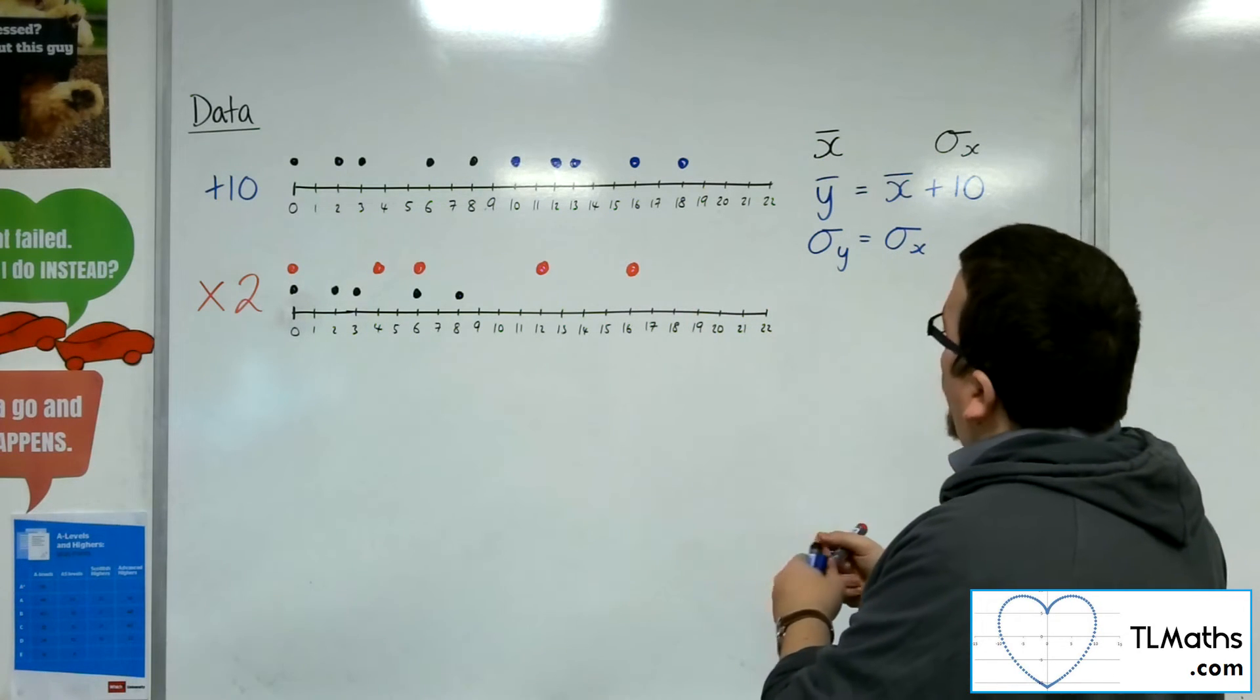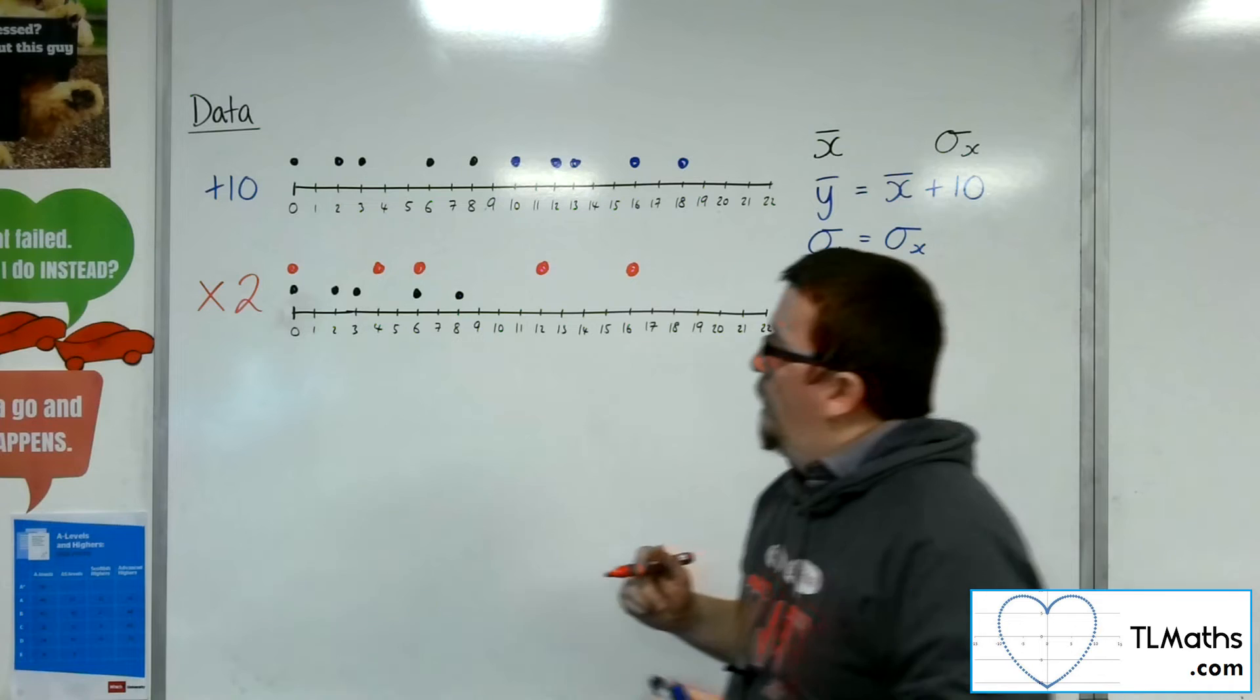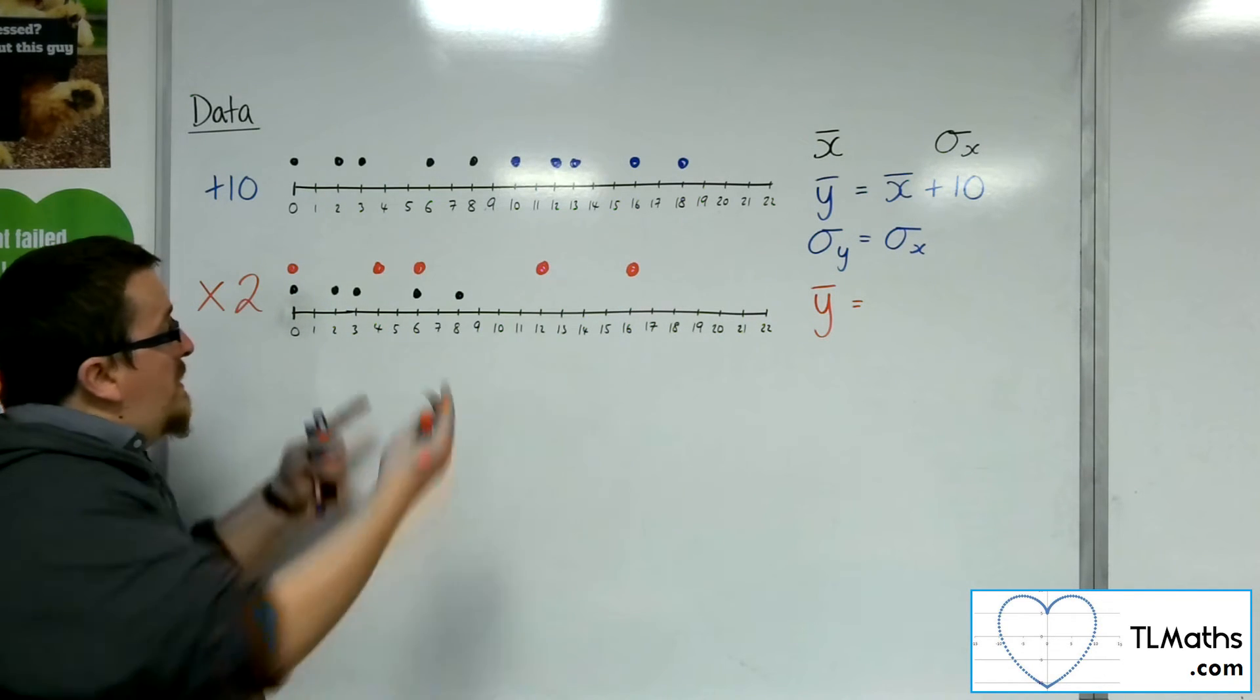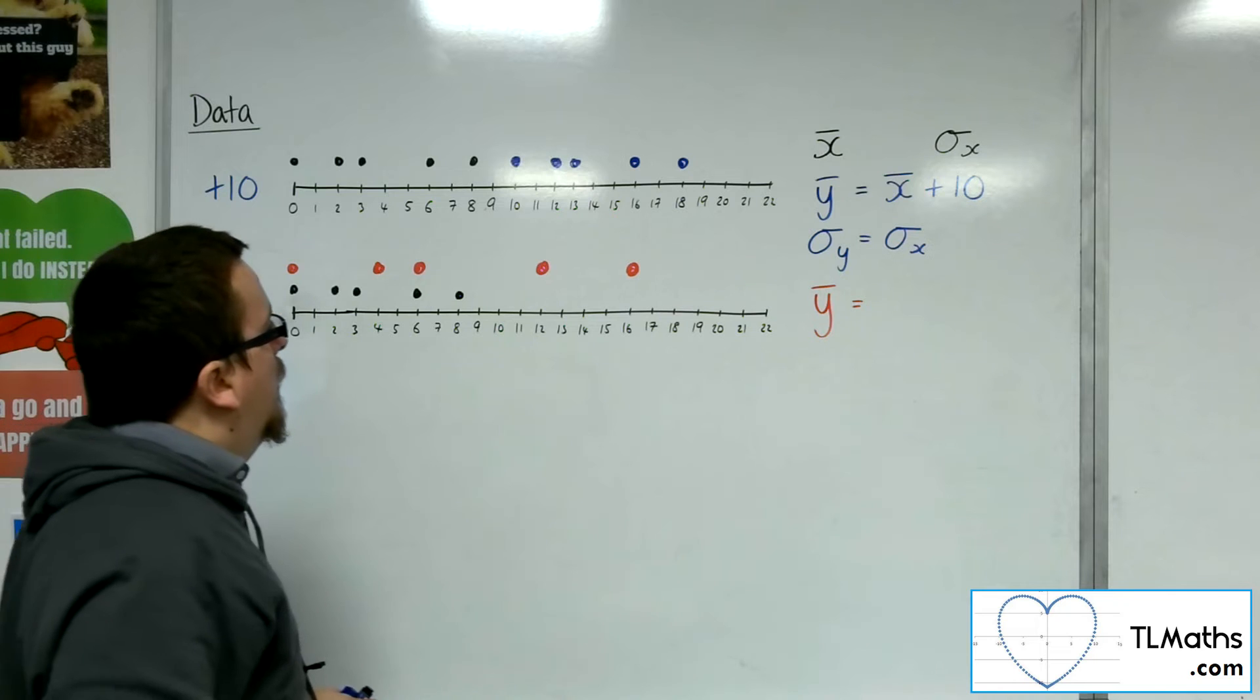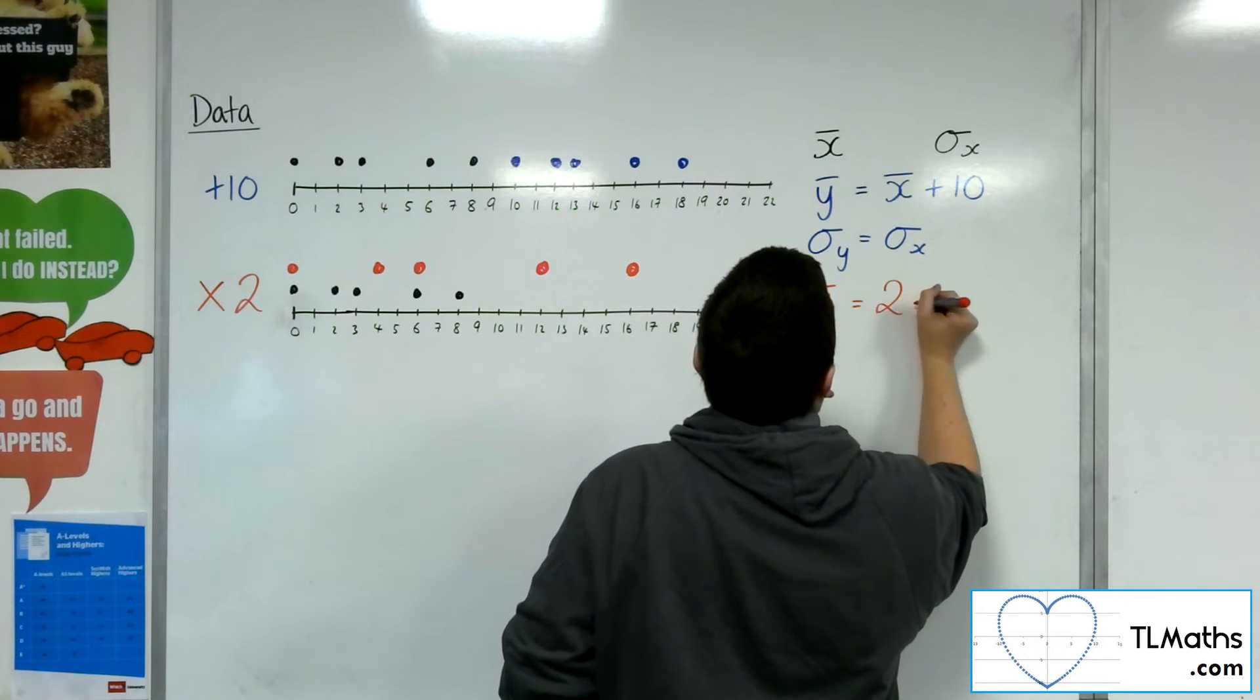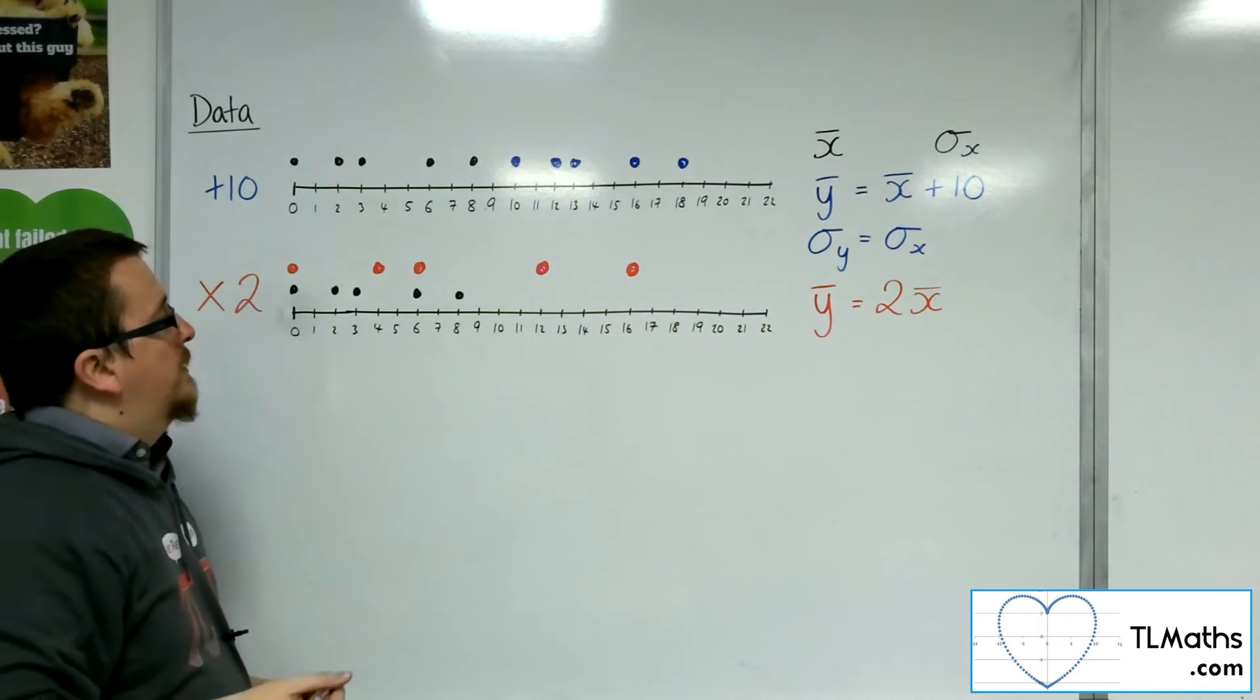So what has happened to the mean? Well, if I've multiplied all of the data items by 2, then the mean will also have been doubled. The mean would now be somewhere around here, I expect. So the mean will be 2 lots, the new mean will be 2 lots of the old mean.